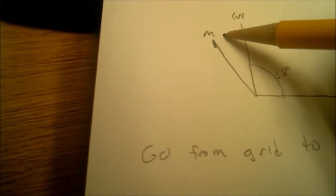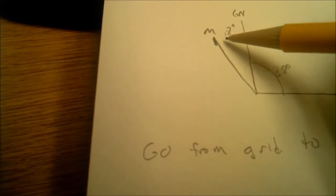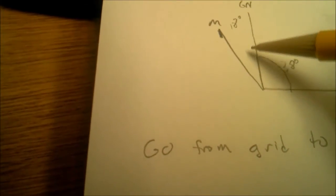I know that the GM angle is 18 degrees. What I don't know is what is my magnetic azimuth.